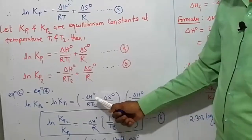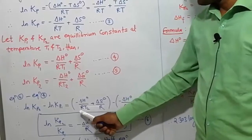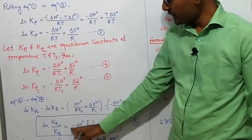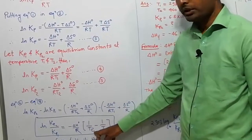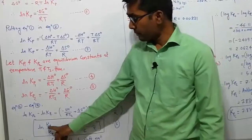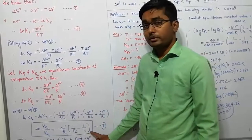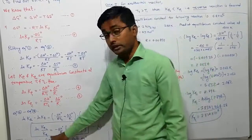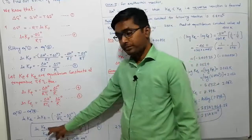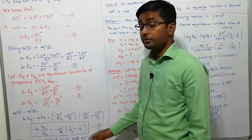Simplifying this equation, the +ΔS⁰/R and −ΔS⁰/R terms cancel out. Taking ΔH⁰/R as a common factor, we get: ln(Kp2/Kp1) = −ΔH⁰/R · (1/T2 − 1/T1). This is the Van't Hoff equation. If we know the equilibrium constant at one temperature, we can predict its value at another temperature.